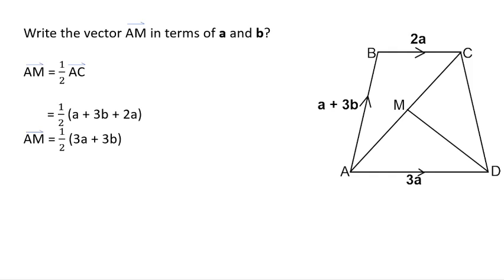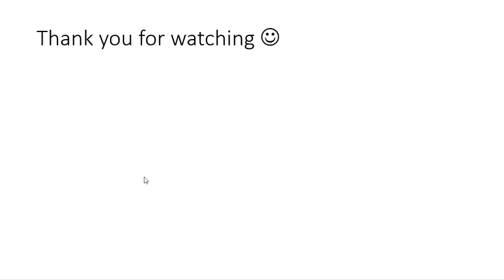Okay, so what's very important here is you've got to realize A to M is half of A to C. So we know A to C is a plus 3b plus 2a, so A to C would be 3a plus 3b. And A to M is half of that, so it would be half of all of that there. Okay, good luck with your work.